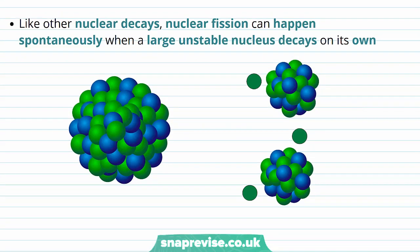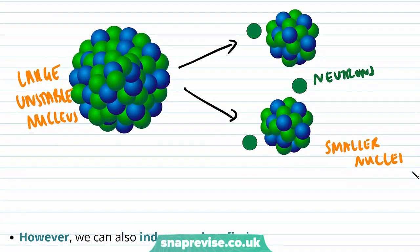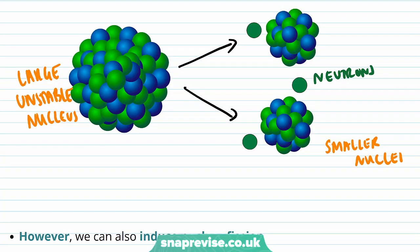Like other nuclear decays, nuclear fission can happen spontaneously when a large unstable nucleus decays on its own. This process can occur spontaneously — it's not prompted by anything.